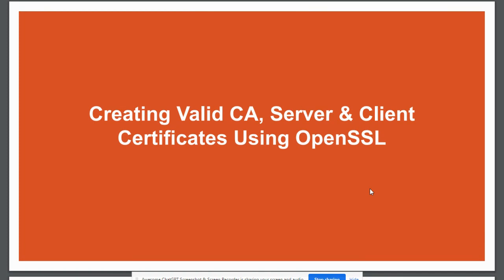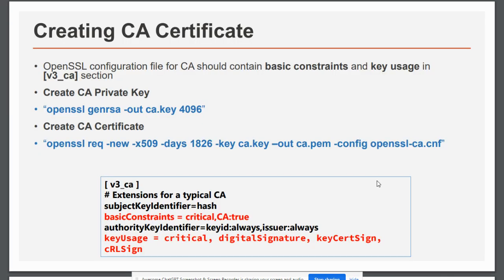Today we will learn how to create valid CA, server, and client certificates using OpenSSL. The first topic is creating a CA certificate — it is a two-step process. In the first step we create the CA private key, and in the second step we create the actual CA certificate, using OpenSSL throughout.